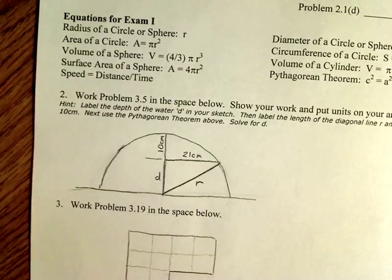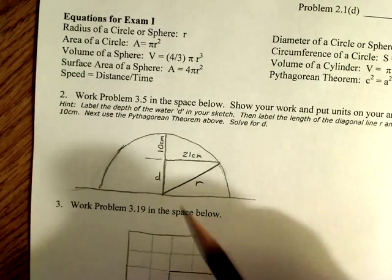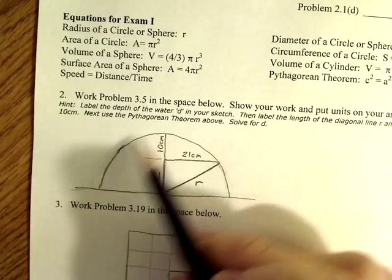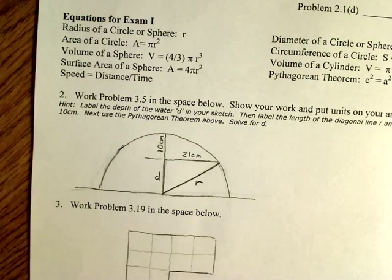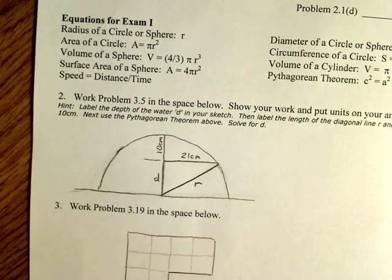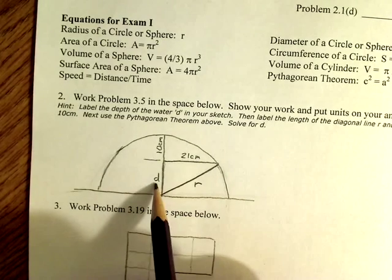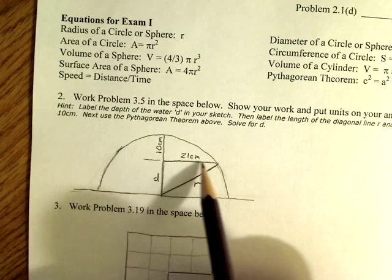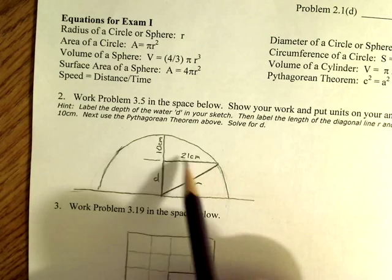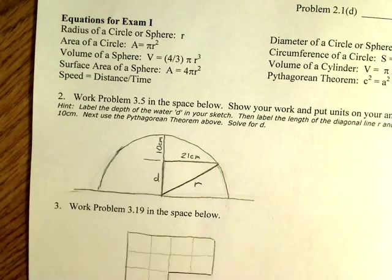In problem number two, a sketch like this might help where R is the radius of this arc defined by the stem described in the problem. D is the depth of the water, so this really goes all the way across like that. So D is the depth of the water. They tell you this distance here is 21 centimeters, and that this distance right here is 10 centimeters.